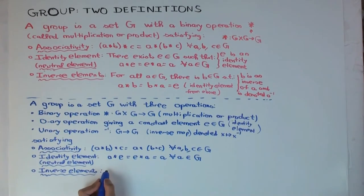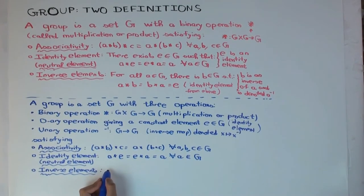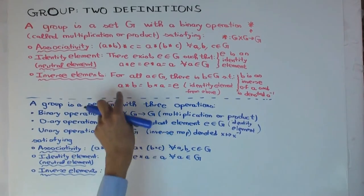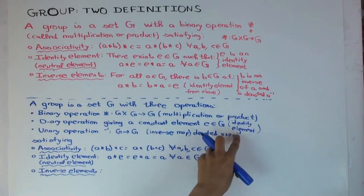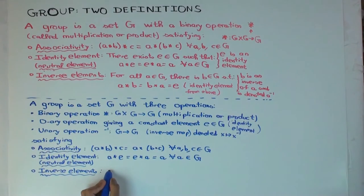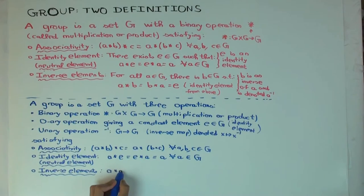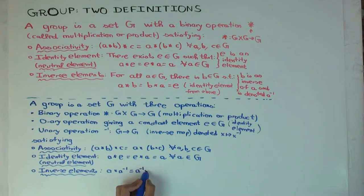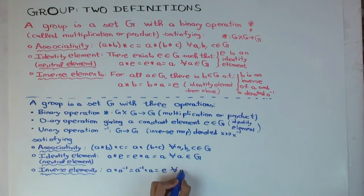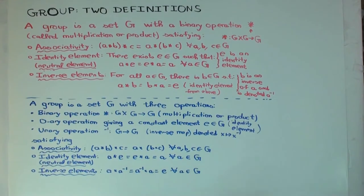For the inverse elements condition, the second definition now uses the inverse operation directly. It says a star a-inverse equals a-inverse star a equals e, for all a in G.